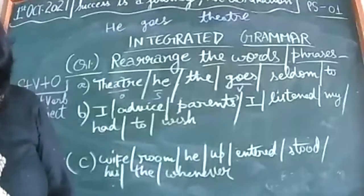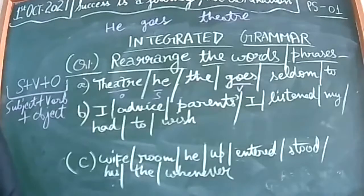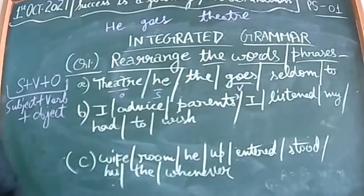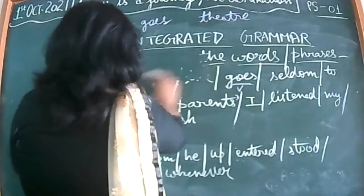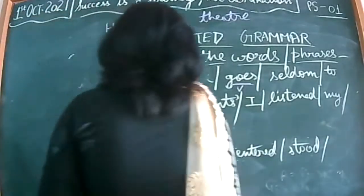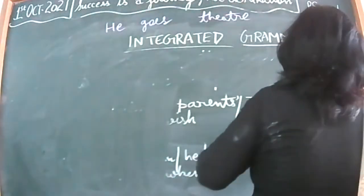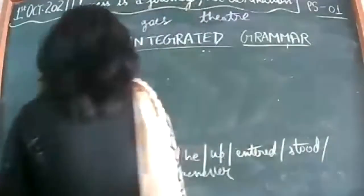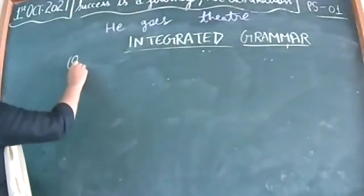That is just practice — there are many sentences. Now we move to the second category. Give the heading: second integrated grammar. First we have done rearrangement. Second, we are going to do gap filling. In your syllabus, determiners, modals, and tenses are there — gap filling can be based on any of these.